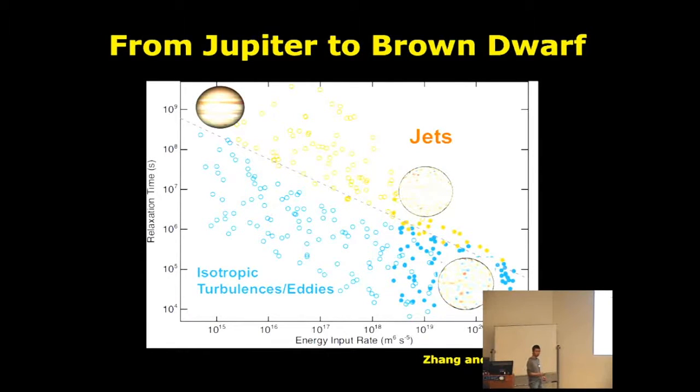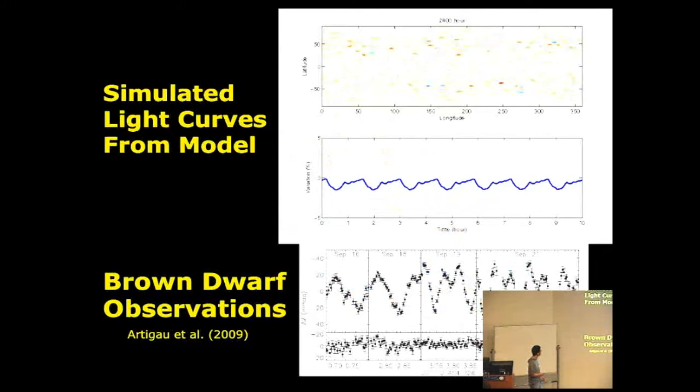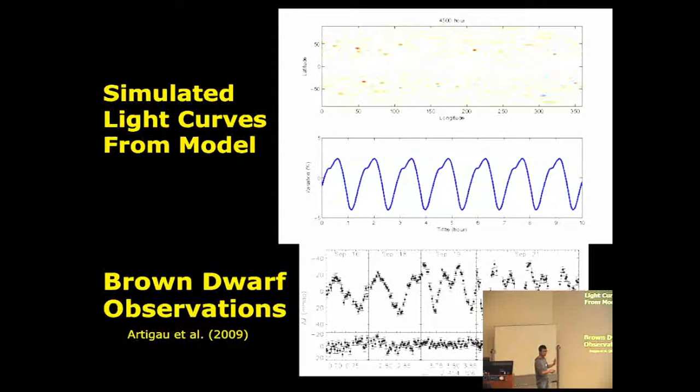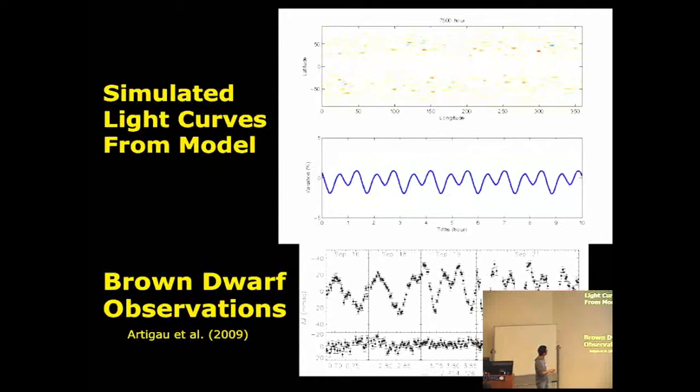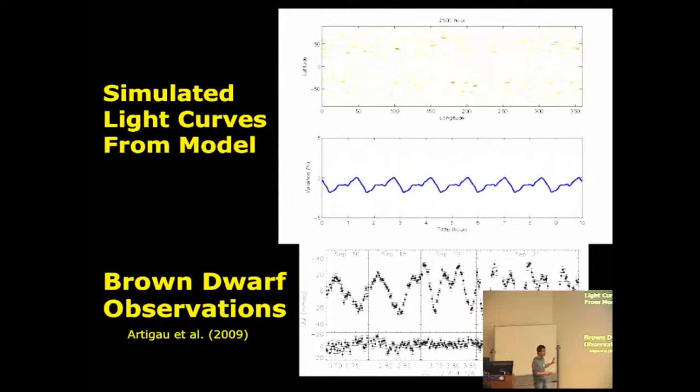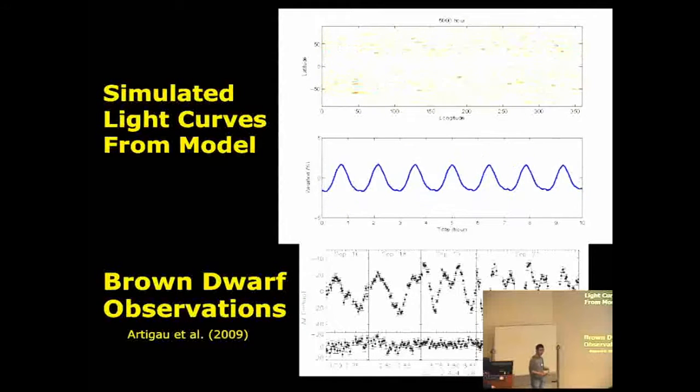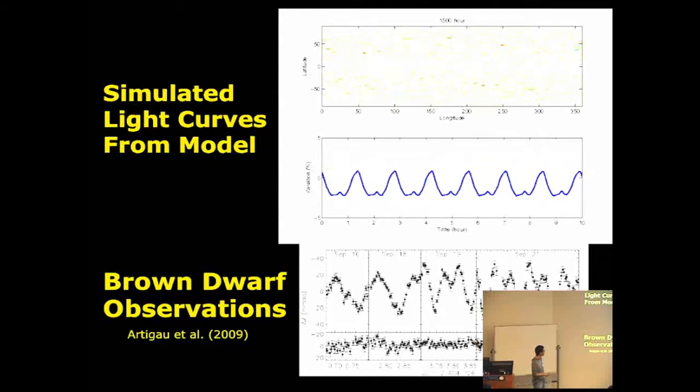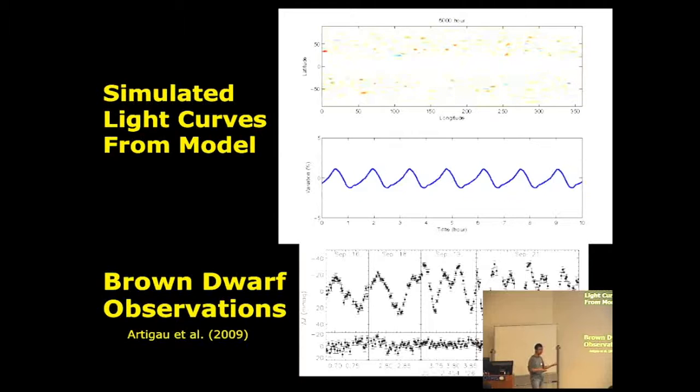What we can observe right now for brown dwarfs is actually the light curve variations. For simple 2D shallow water models, you can integrate it for a long time. So you can see this kind of integrated flux proxy changes with time. This variation is about like 5%. Of course, it depends on your parameter. But this is something related to what we have observed for brown dwarf light curve variations. This is an interesting scenario to think about. Maybe you can understand light curve variations in terms of a very simple model.